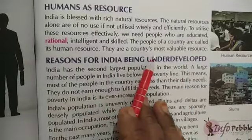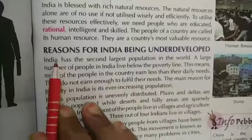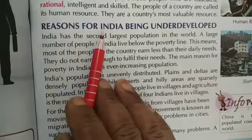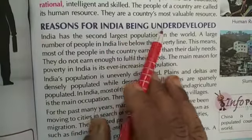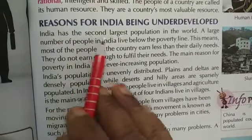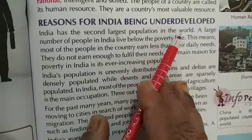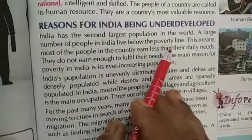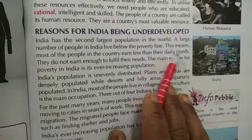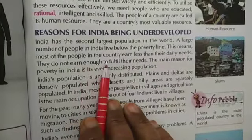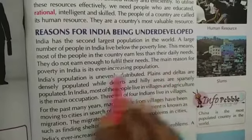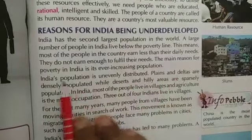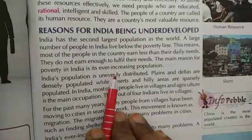Reasons for India being underdeveloped: India has the second largest population in the world. A large number of people in India live below the poverty line. This means most of the people in the country earn less than their daily needs — they do not earn enough to fulfill their needs. The main reason for poverty in India is its ever-increasing population.